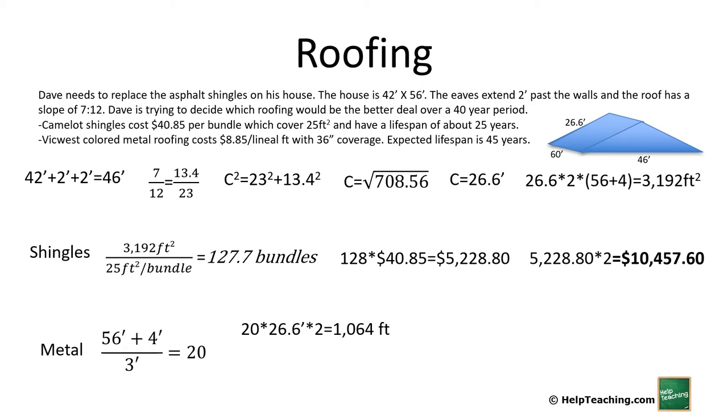The other way to figure this out is that we can take the 3,192 square feet that we already calculated for the shingles. And if you think about the metal roofing, every lineal foot is 1 foot long and 3 feet wide, which is the equivalent of 3 square feet. So if we take 3,192 divided by 3, we also get 1,064. Either way works fine.